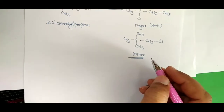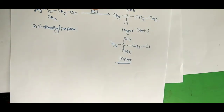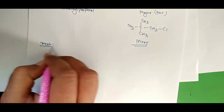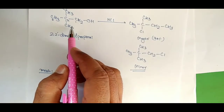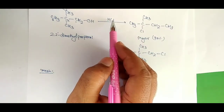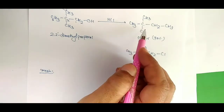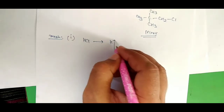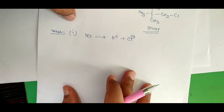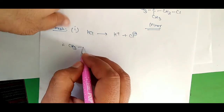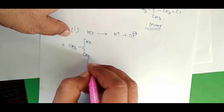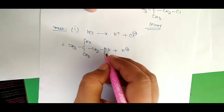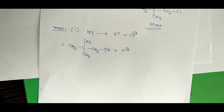Now we have to study this mechanism with the help of the Methyl Shift. We will explain this by the mechanism, so let's start. The reaction here shows the reactant and its product, with the reagents on the arrow. Since the reagents are HCl, in the first step HCl dissociates into H⁺ and Cl⁻.